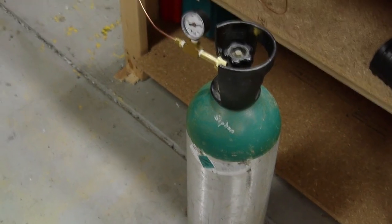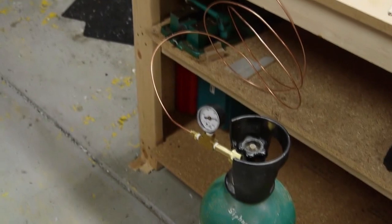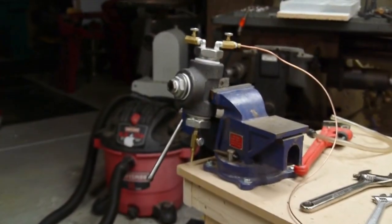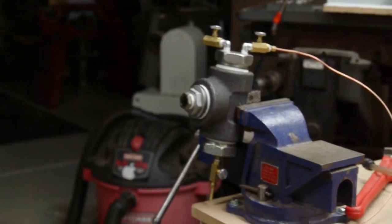There's no regulator—that's just a T with a gauge on it. The liquid CO2 flows through that copper tube and into the chamber there.